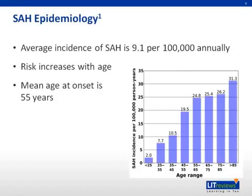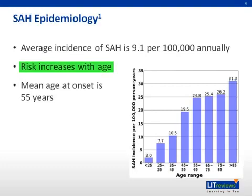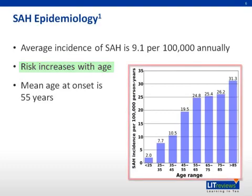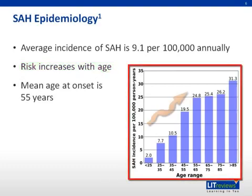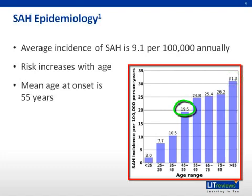Thus, most aneurysms don't rupture. Although the group of people at risk for subarachnoid hemorrhage is younger than the population usually affected by stroke, the risk still increases with age. As you can see in the graph on the right, the risk continues to rise with age and is 60% higher in the very elderly, over 85, when compared to those between 45 and 55.